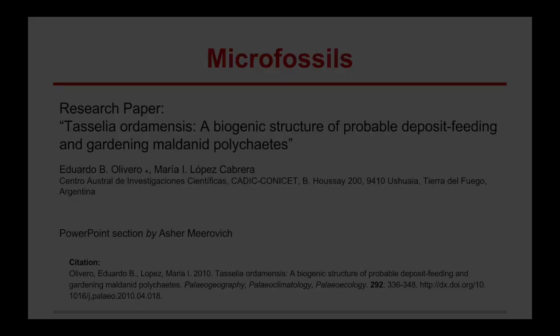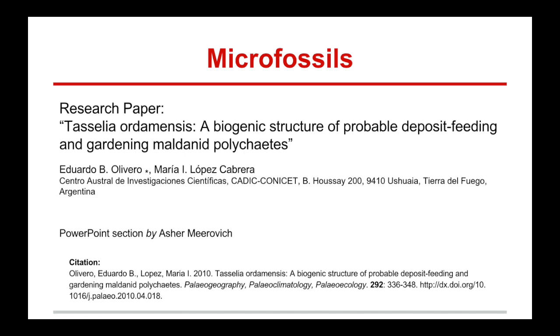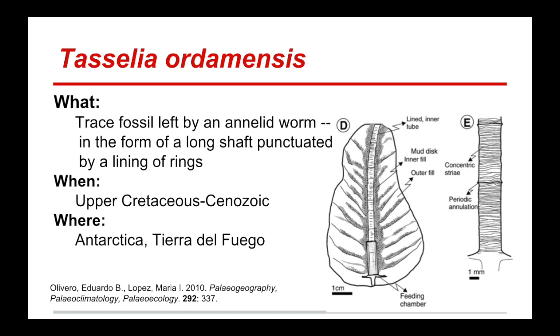My name is Asher Mirovich, and my paper was "Tassilia ordemensis: a Biogenic Structure of Probable Deposit Feeding and Gardening Maldanid Polychaetes," by Eduardo B. Oliveira and Maria I. López Caballero. Tassilia ordemensis is a trace fossil thought to be left by an annelid worm in the form of a long shaft punctuated by a lining of rings. These fossils are generally found to have belonged to the Upper Cretaceous to Cenozoic eras and are most commonly found in Antarctica and Tierra del Fuego.